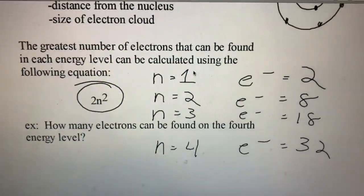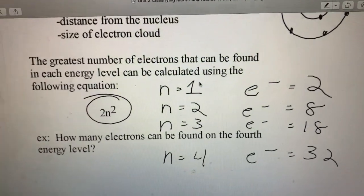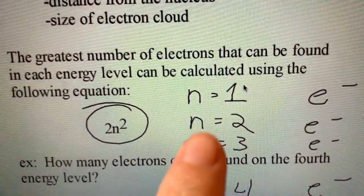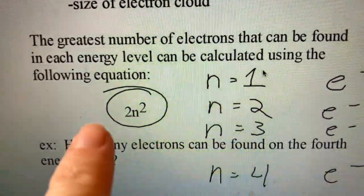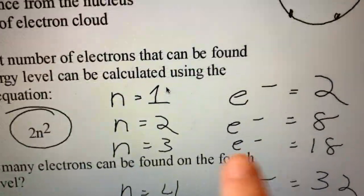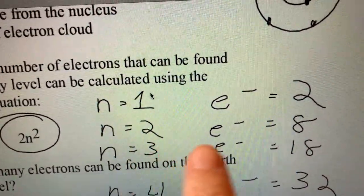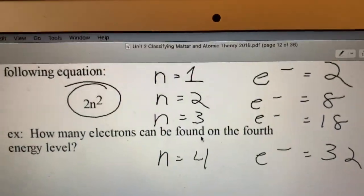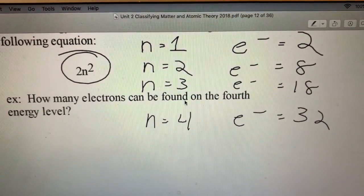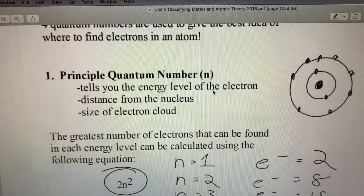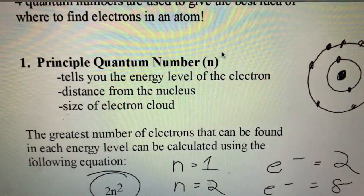How do we figure out how many electrons can live on each energy level? The greatest number of electrons that can be found in each level can be calculated using this equation: 2n². If you're in your first energy level, n becomes one. One squared is still one, and two times one is two. So in the first energy level you can have two electrons. Second energy level is going to give you eight, and that third energy level you can have 18. A little more practice - fourth energy level could have 32 electrons. That's our principal quantum number, which gets the abbreviation n.